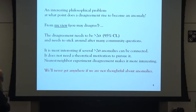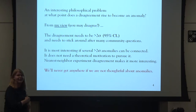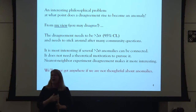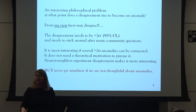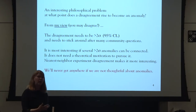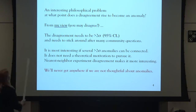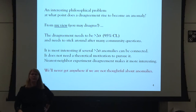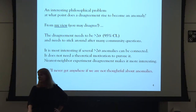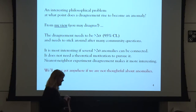This leads to an interesting philosophical problem: at what point does a disagreement rise to become an anomaly? From my view — and you may disagree — I like to see something above two sigma. That's the point at which I think an anomaly is worth starting to explore. A disagreement above two sigma, having a 5% probability it could happen by chance, is the sort of thing I find interesting. I'm going to call it an anomalous signal throughout this talk.